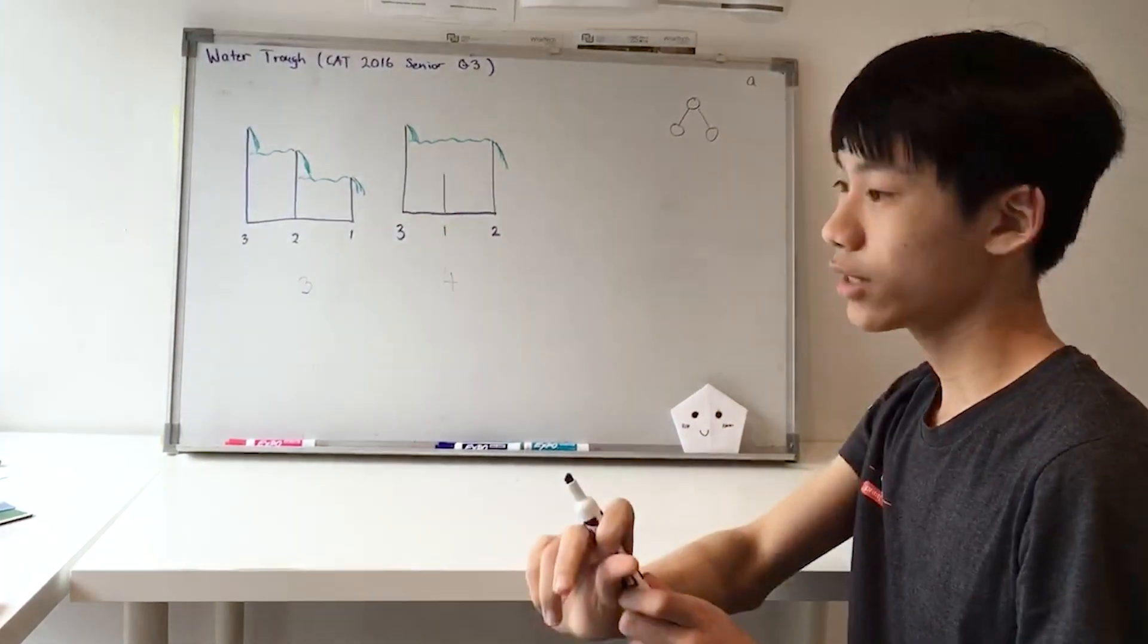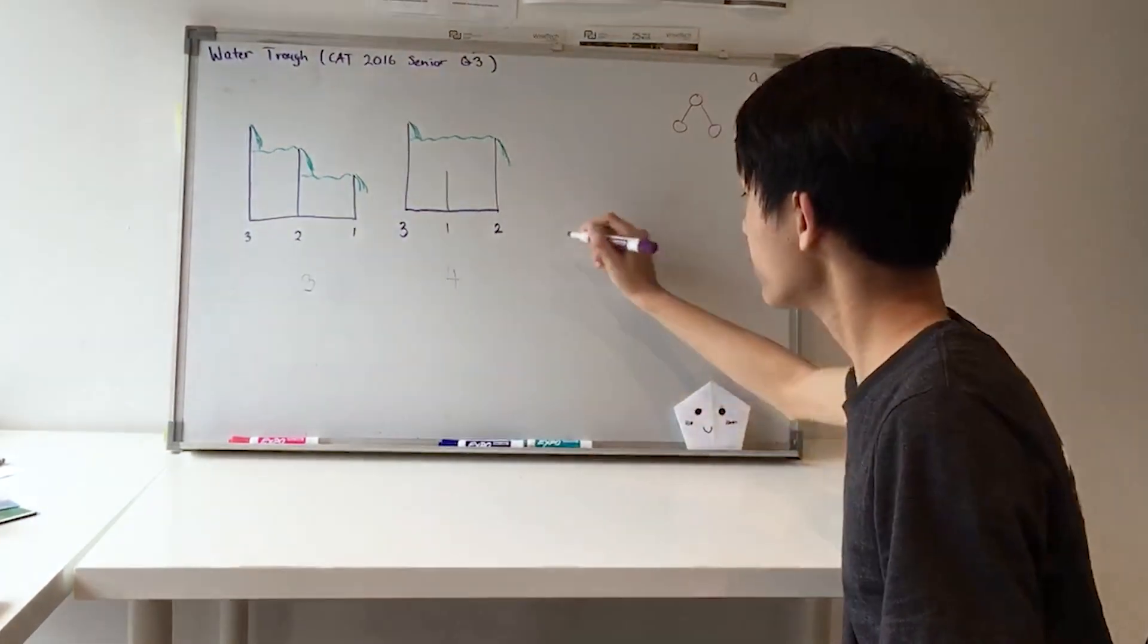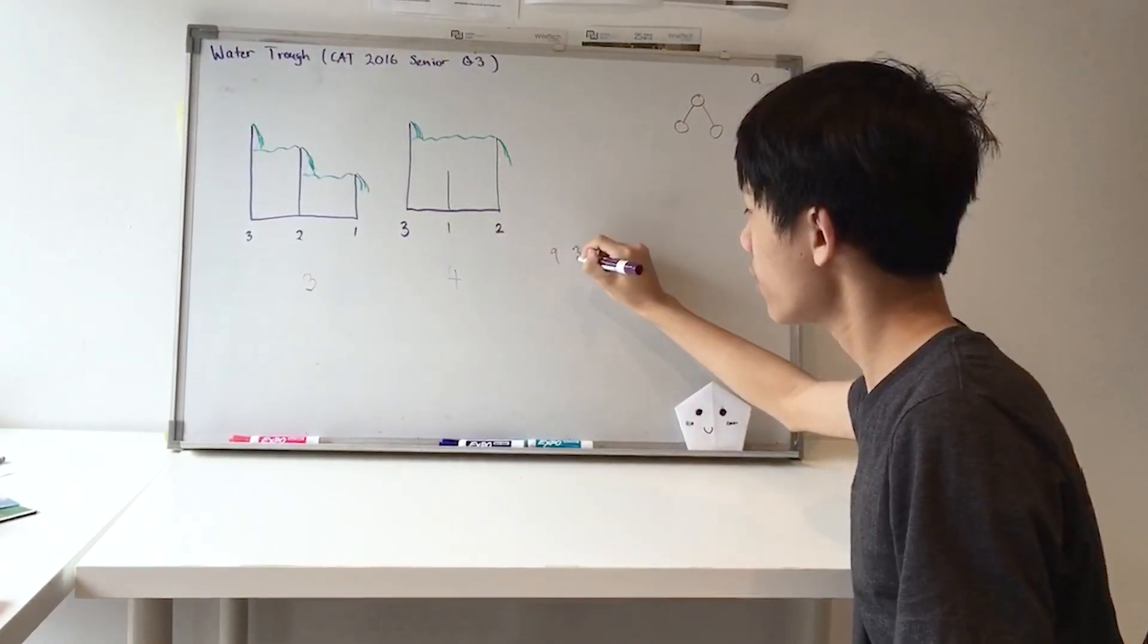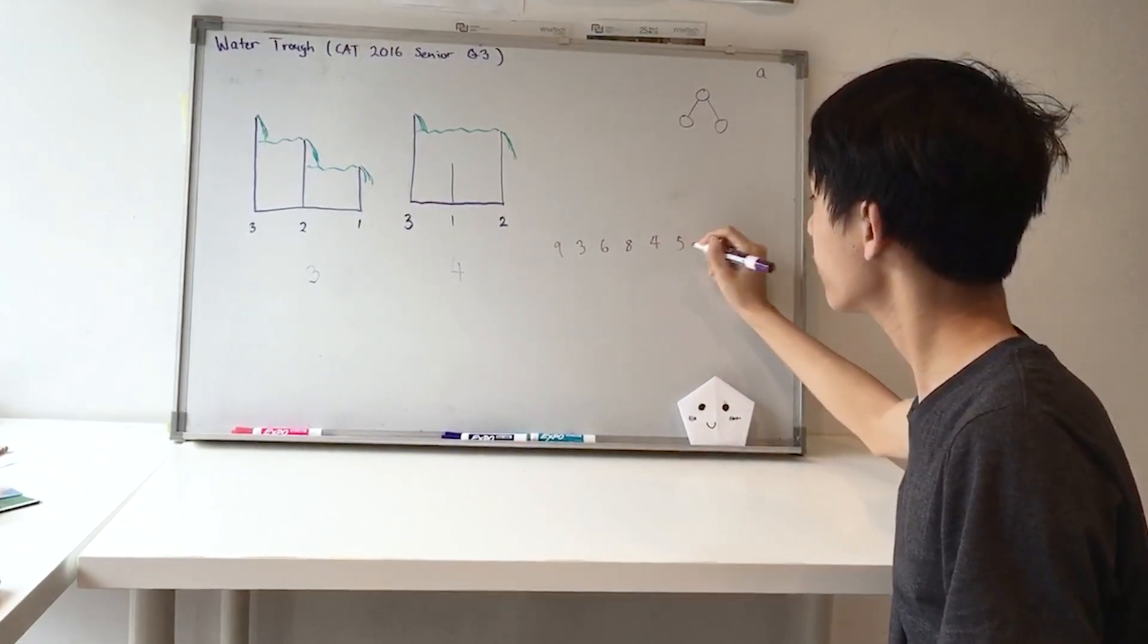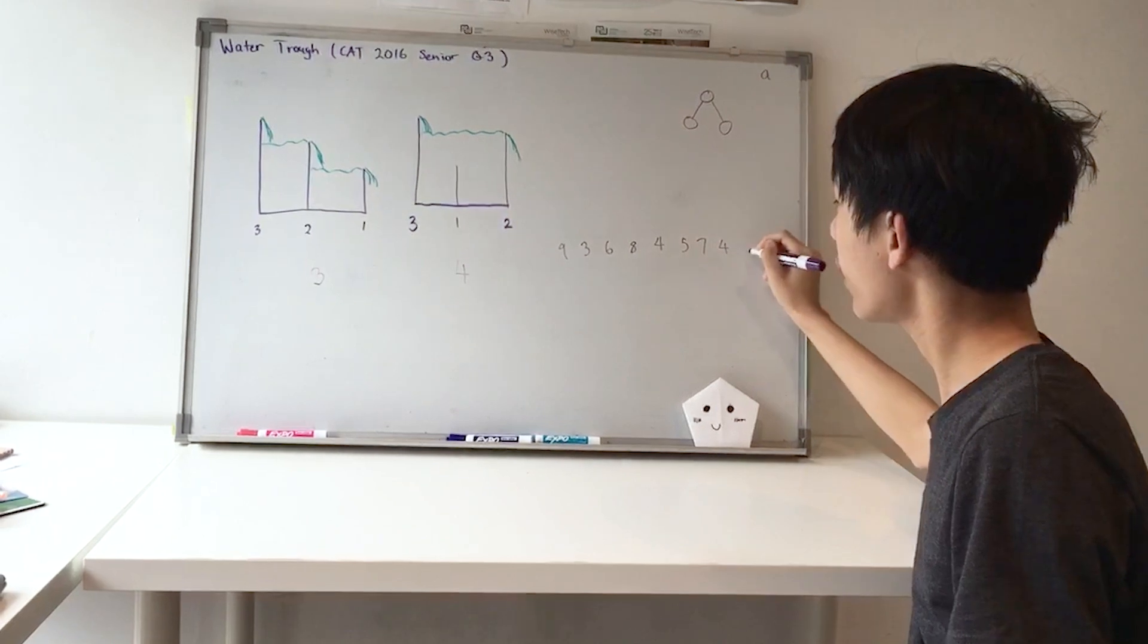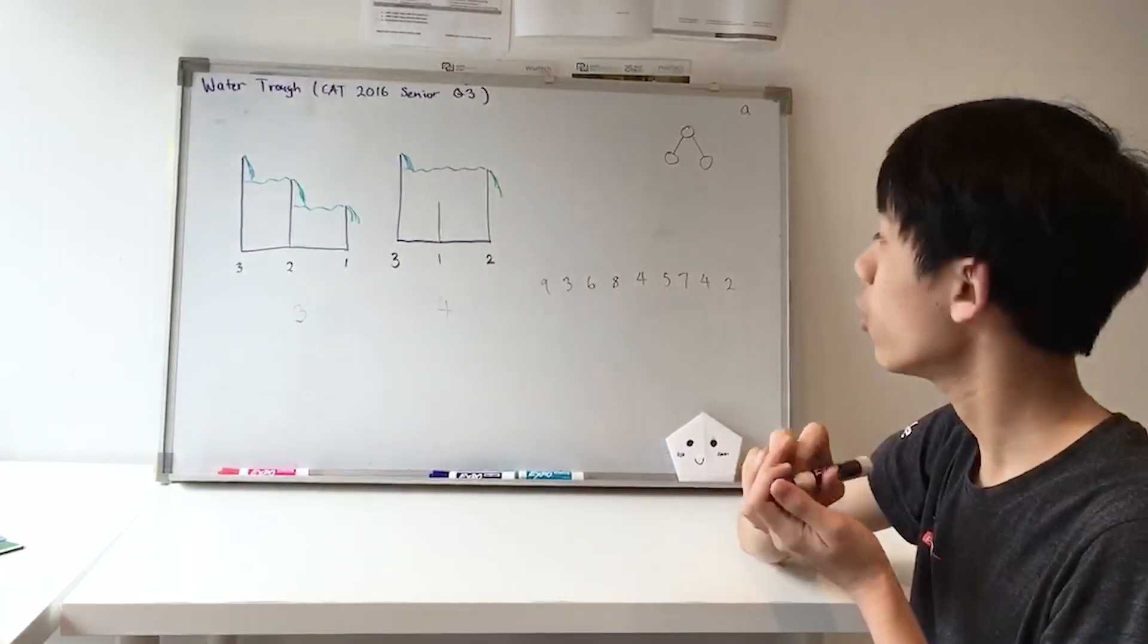The question is, if we have a water trough with baffles of height 9, 3, 6, 8, 4, 5, 7, 4, and 2, how much water will it hold?